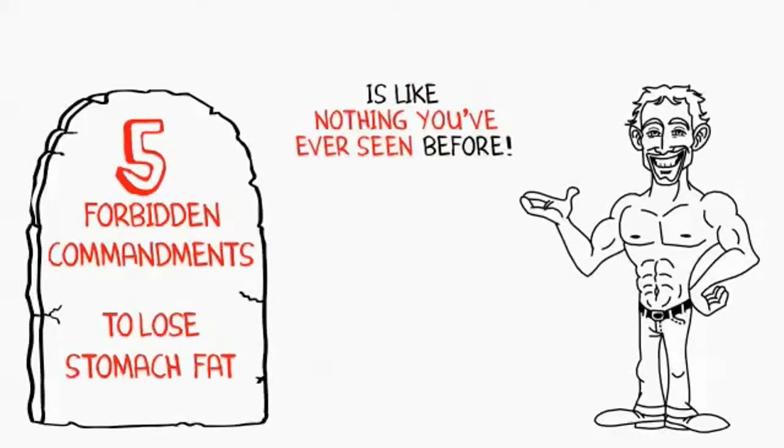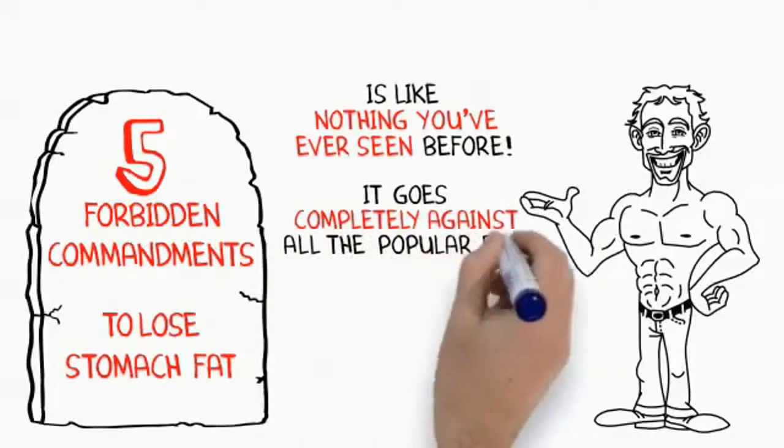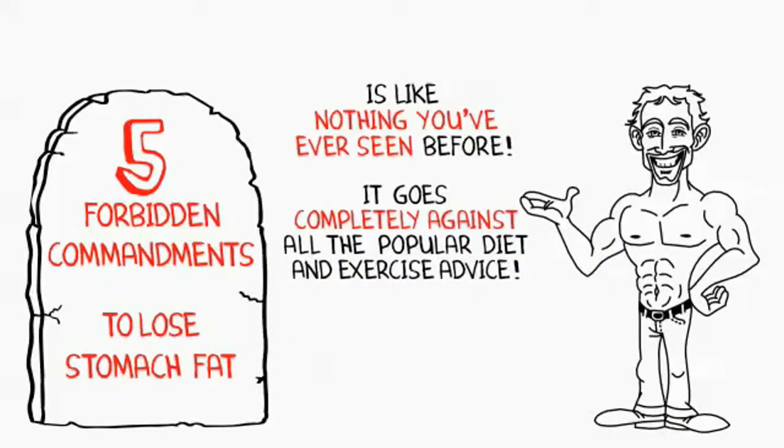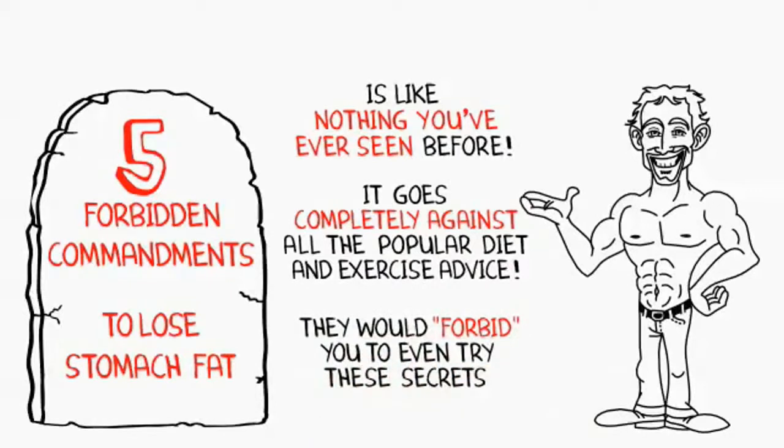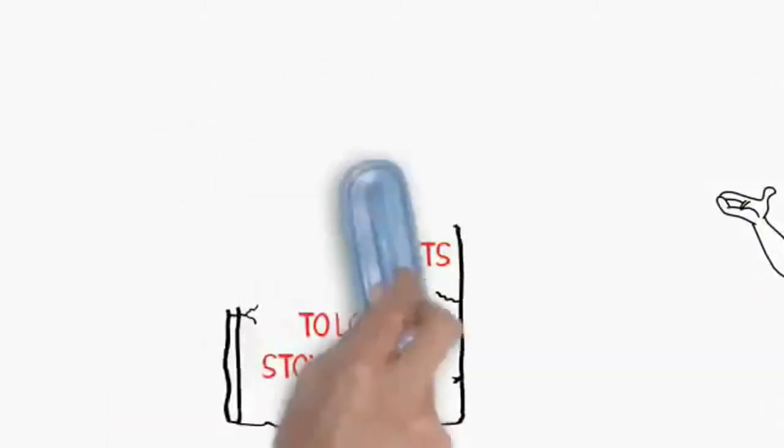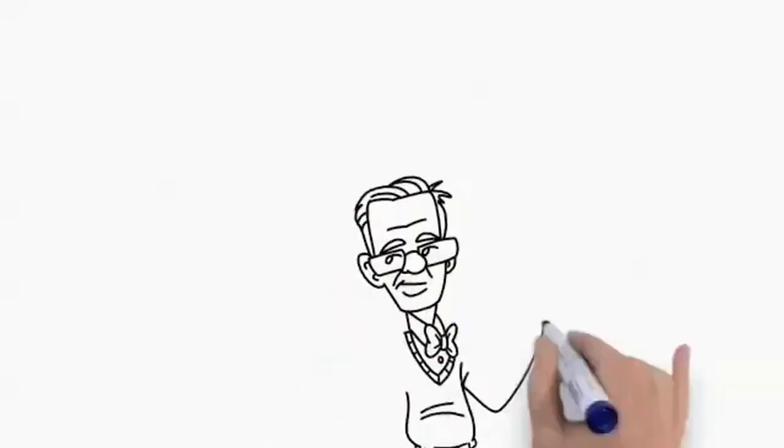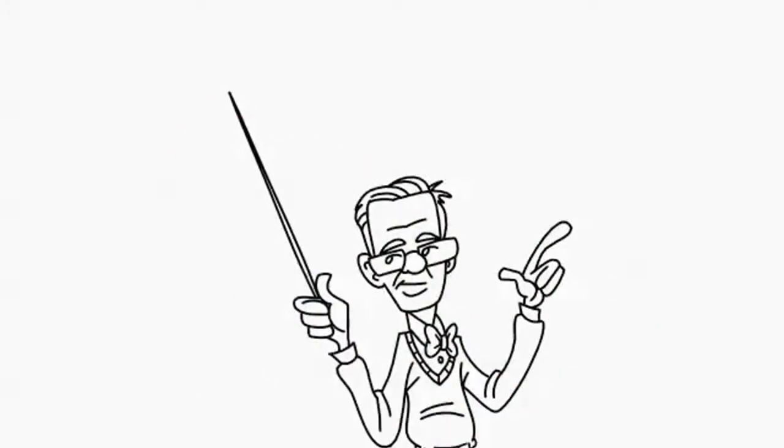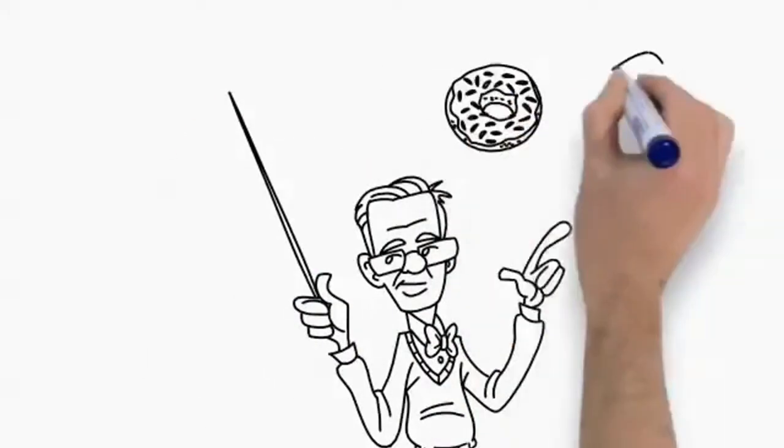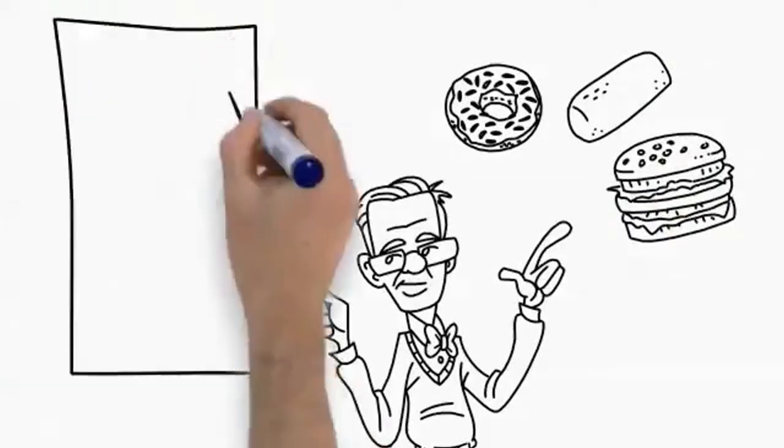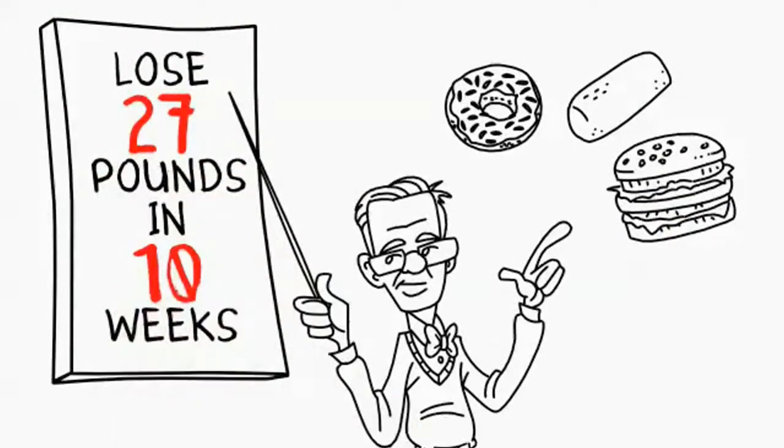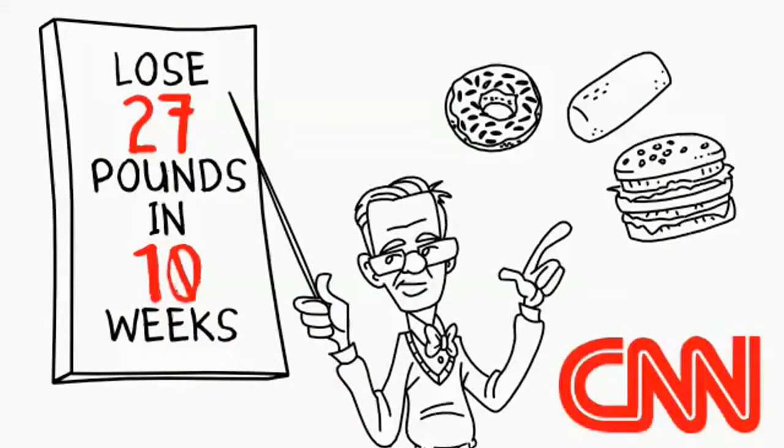In fact, it may even shock you because it goes completely against all the popular diet and exercise advice you may have ever heard. They would forbid you to even try these secrets. For example, I'll share how one man, a nutrition professor at Kansas State University, proved you can eat nothing but donuts, Twinkies, and other junk food and still lose 27 pounds in 10 weeks. It was even reported on CNN, but I'll reveal the secret trick he used to achieve such stunning results.